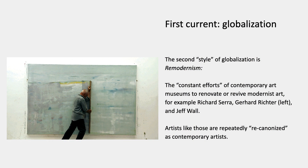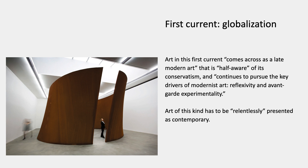The second style of globalization is re-modernism. Terry Smith describes that as the constant efforts of contemporary art museums to renovate or revive modernist art — for example, Richard Serra, Gerhard Richter doing one of his abstract paintings by dragging a board across his canvas, and Jeff Wall. These are artists of a particular generation that are repeatedly re-canonized as contemporary artists. Art in this current comes across as late modern art that is half aware of its conservatism, and continues to pursue the key drivers of modernist art: reflexivity and avant-garde experimentality. People like Richard Serra are half aware that they were modernist icons in the 70s and 80s and have since been relentlessly re-canonized as contemporary — Smith says art of this kind has to be relentlessly presented as contemporary in order to work.